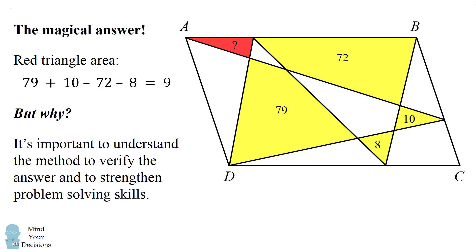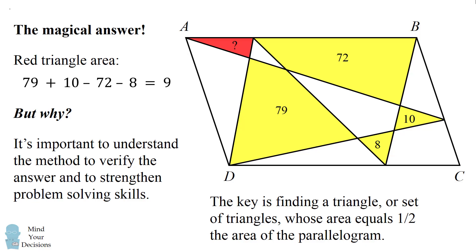So even though I didn't find the answer, it was very exciting for me to understand how the answer could be solved in such a simple method. Bill explained to me, the key is finding a triangle, or set of triangles, whose area equals one half the area of the parallelogram.